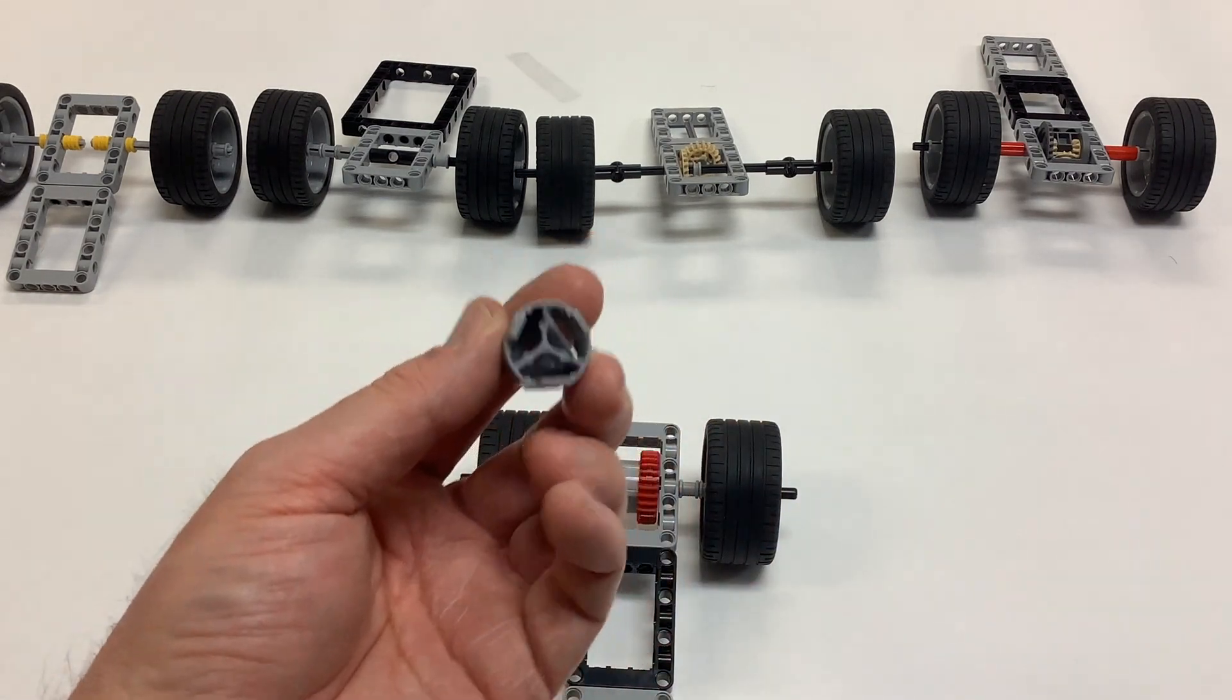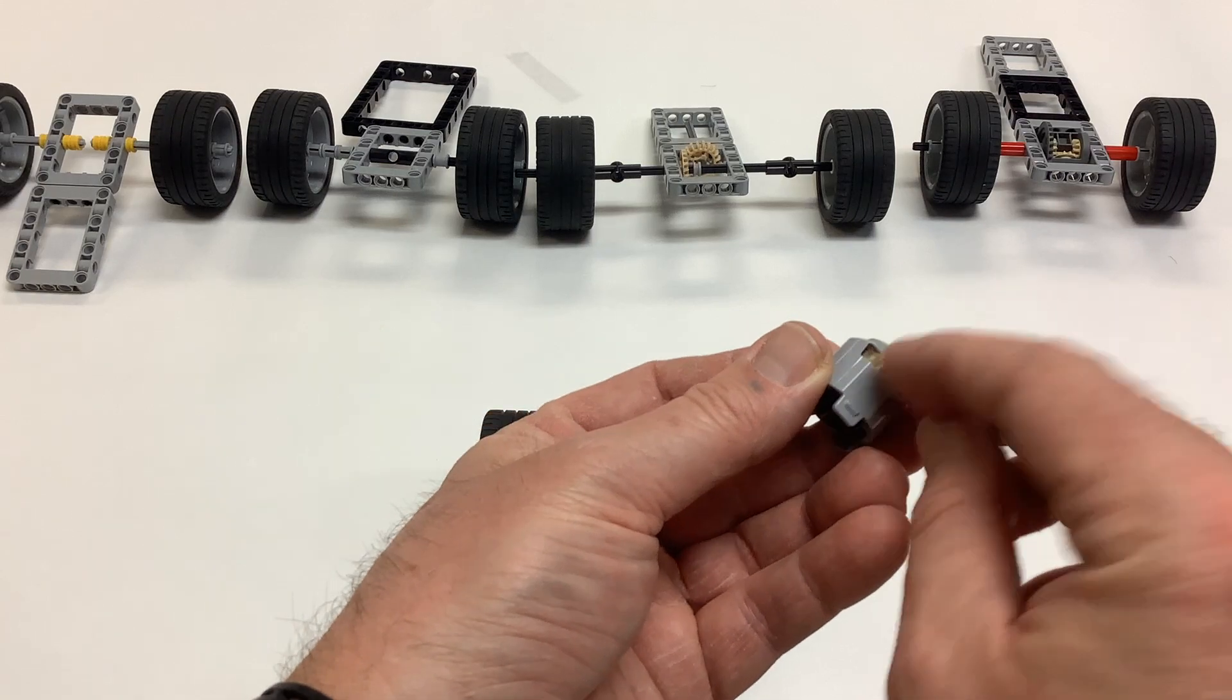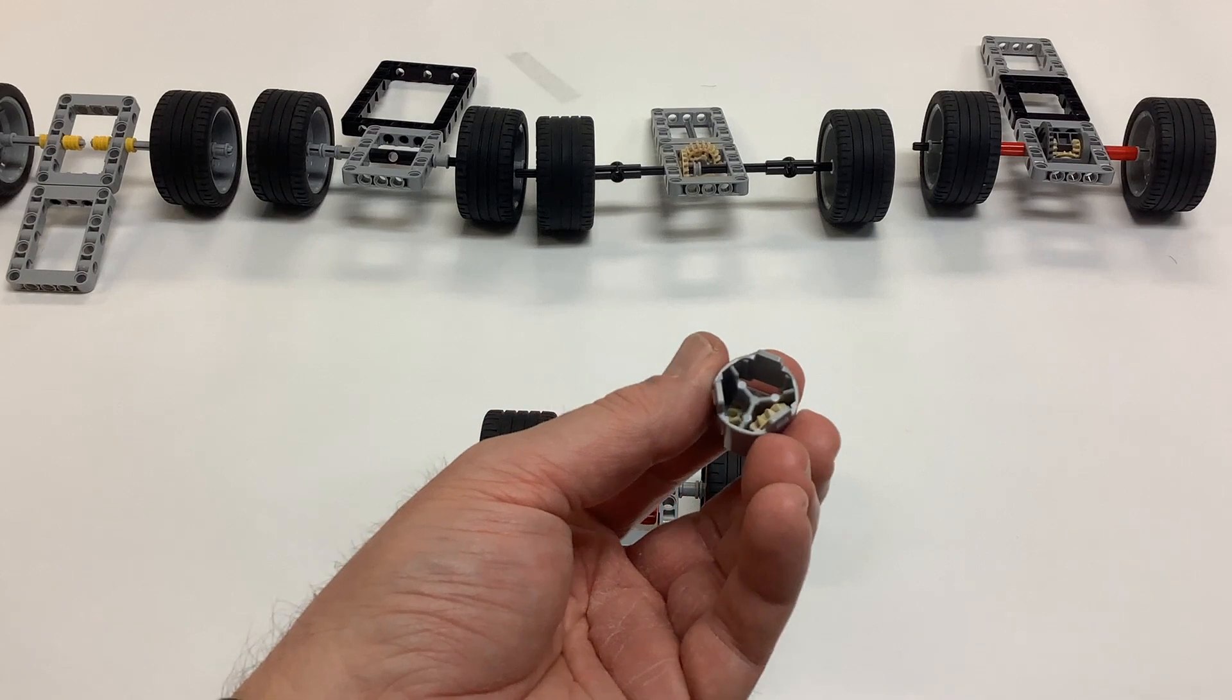Just so you can see what the inside looks like. The way that you build it is you just take one of these half beveled gears and put it in the side. And then take these other guys and put those in there.